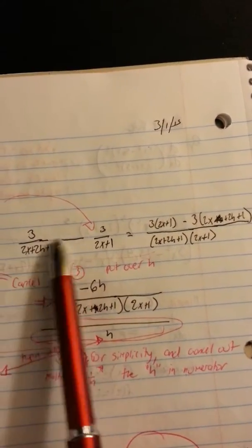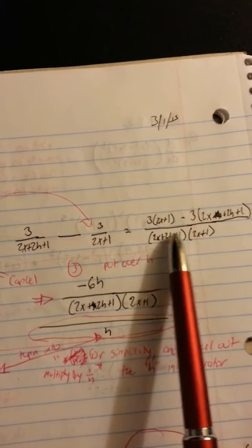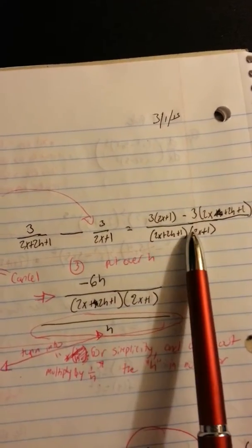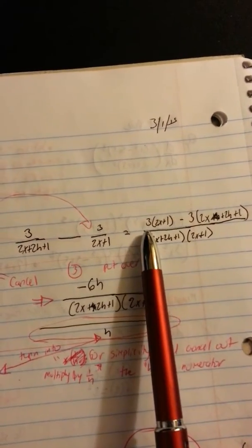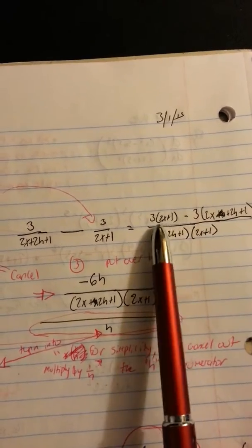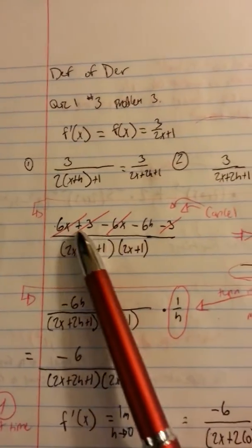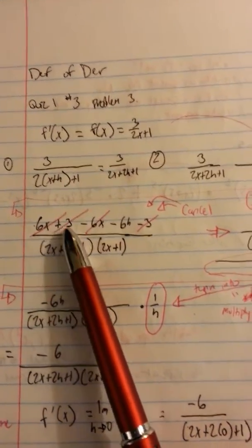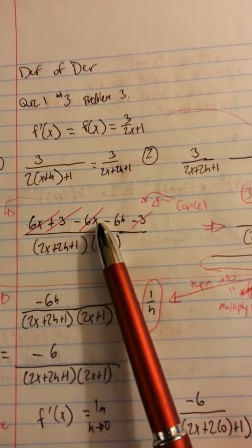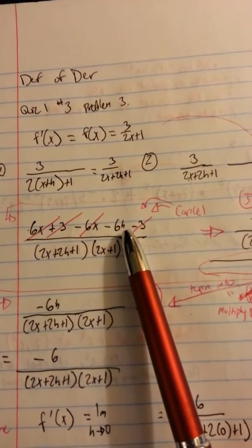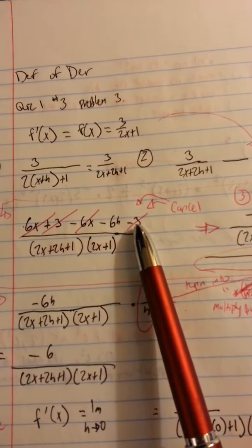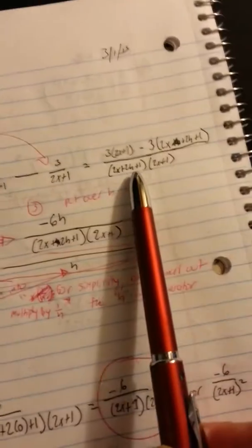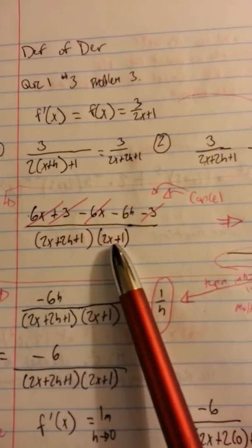Minus 3 times 2x plus 2h plus 1. And you see it's right over here. And you leave the bottom, these two denominators, just bring them over. You're not going to do anything, just bring them over. So you have that. What's the next step? Well, it's to distribute and solve them.